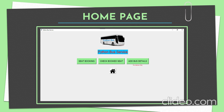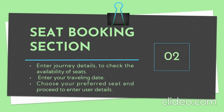It is important to note that add bus details is for admins only — that is, the bus conductor. No passengers can add bus details. If you click on the seat booking section, it shows three steps: enter journey details to check seat availability, enter your traveling date, choose your preferred seat, and proceed to enter user details.